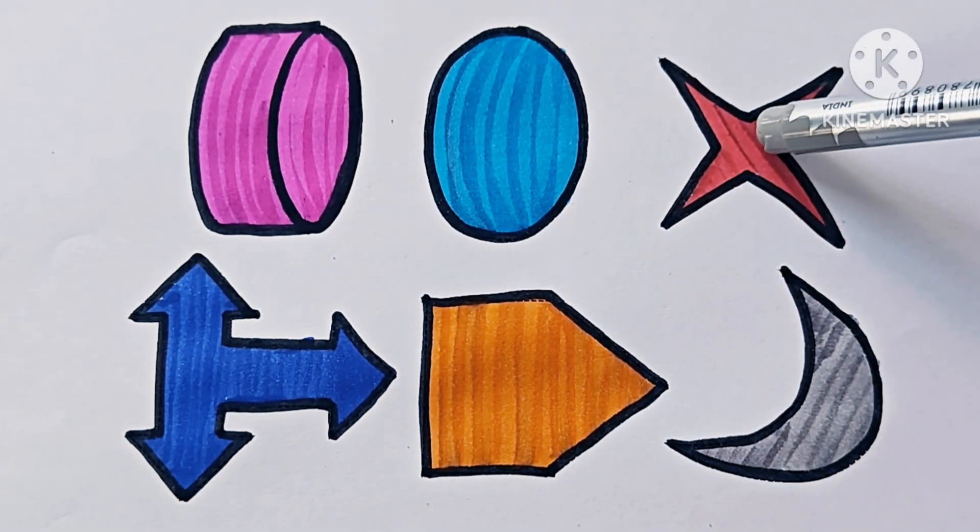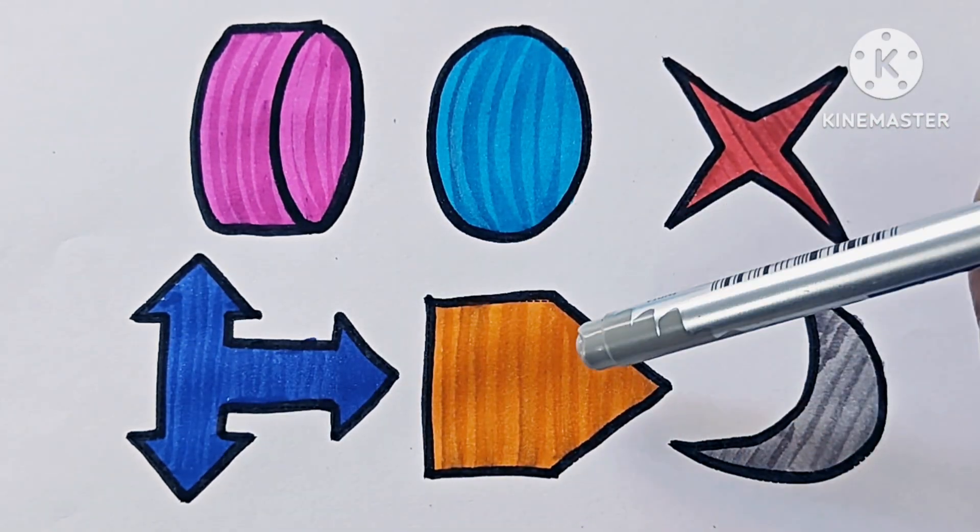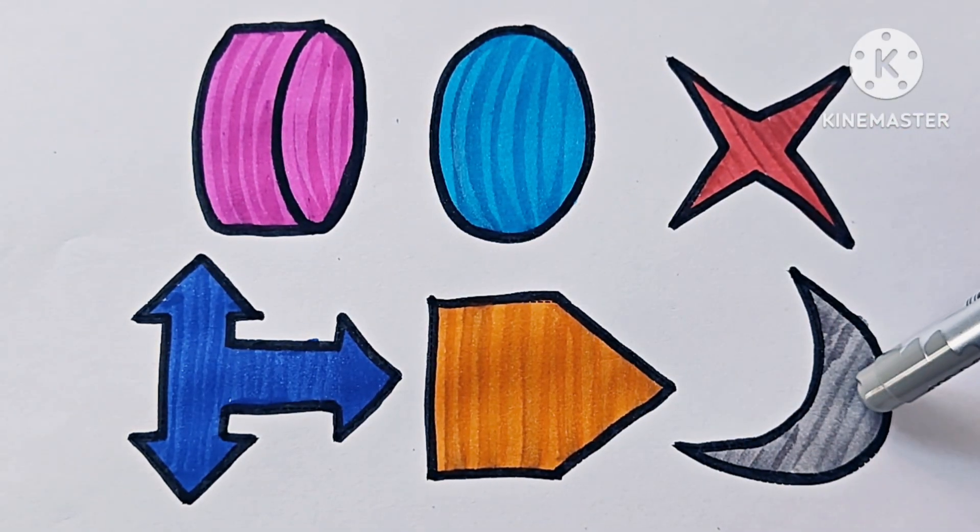Cylinder. Oval. 4-pointed star. Up, down, right arrow. It is a pentagon arrow. And a crescent moon.